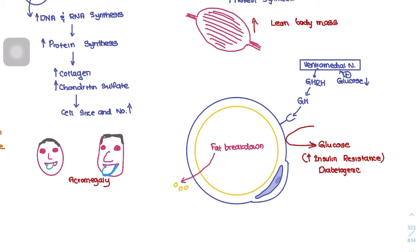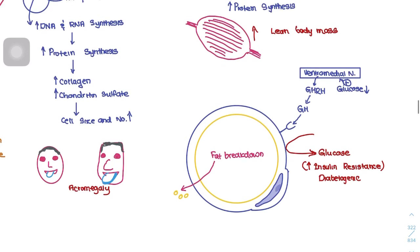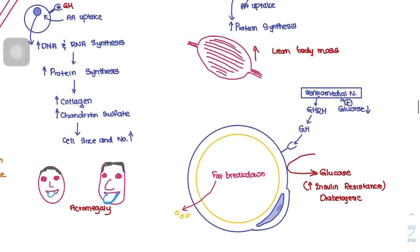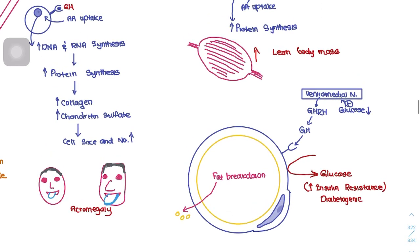Growth hormone is therefore described as diabetogenic. It also prevents glucose from entering other cell types such as muscle cells.